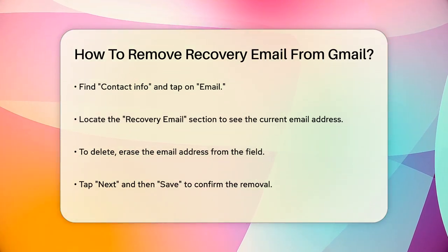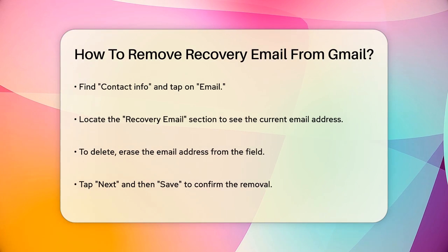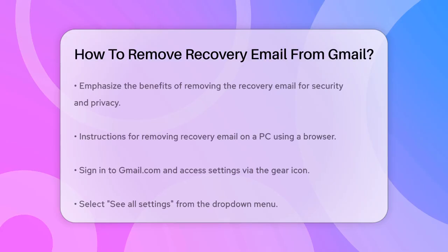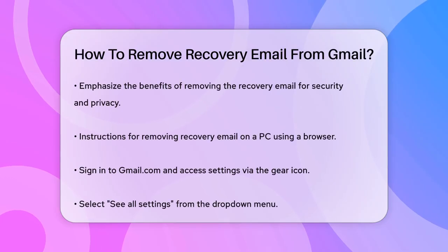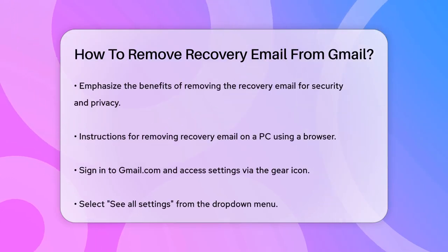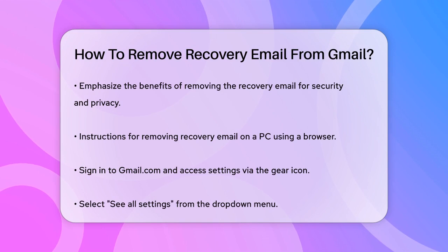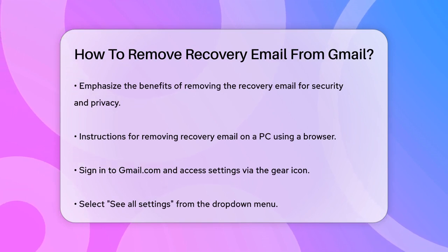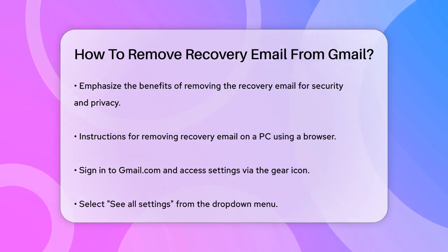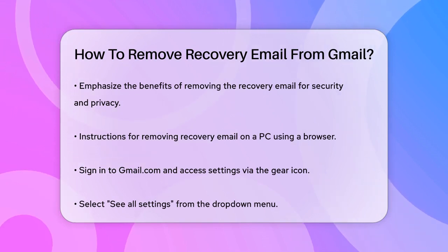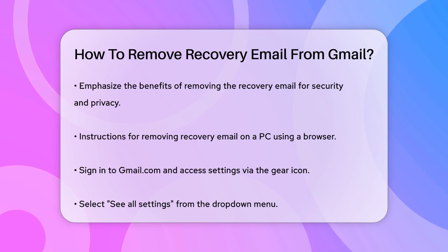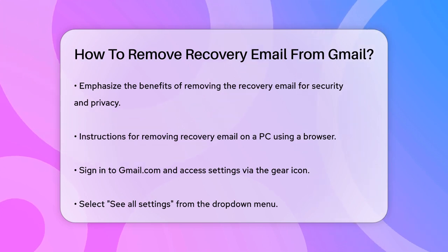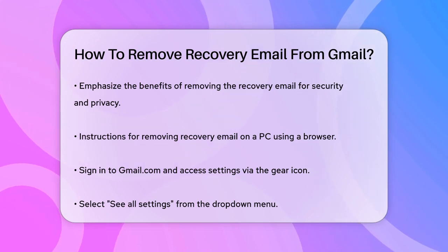In the settings menu, go to the security section. Scroll down until you find the recovery email option. Tap on it, then tap continue. Now you can remove your recovery email by deleting it from the field. Finally, tap next to confirm the removal.